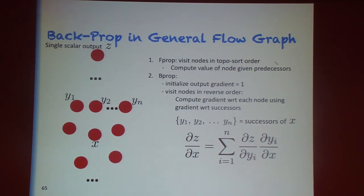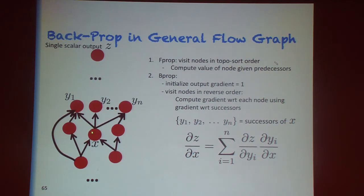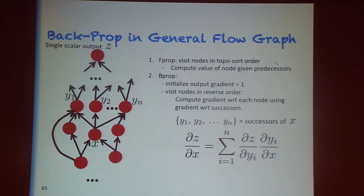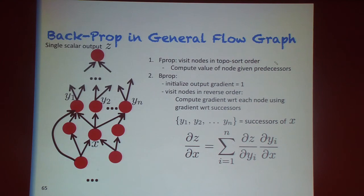In f-prop, we traverse the graph in topological order so each node is computed only after its predecessors. Then in back-prop, we initialize with dz/dz = 1 and apply the chain rule recursion going in reverse topological order, computing gradients for all nodes. This gives us gradients for any graph or computation.